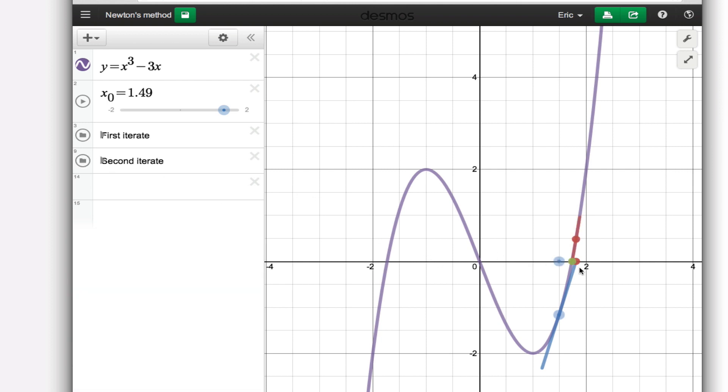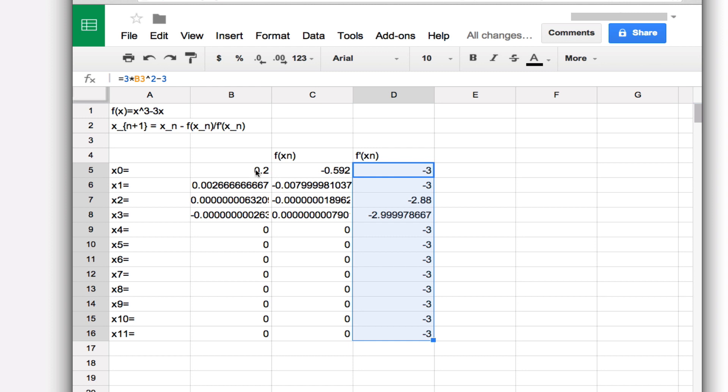Now when I slide this point along, you can see not only the first iterate, but now I take that one and find the tangent line to the graph at that point and follow it to the x-axis. You can see that even if I'm not doing a great job on the first iterate, the second iterate comes very close to the root. This tells me I should choose a value somewhere around 1.5, or I could also choose two.